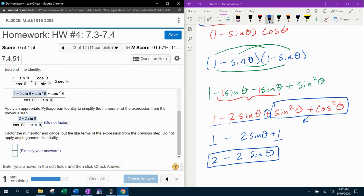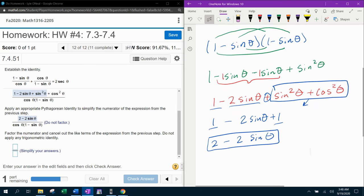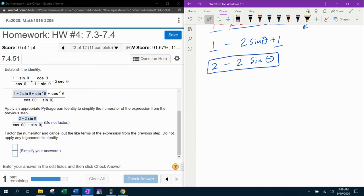Two minus two sine theta. Factor the numerator and cancel out the like terms of the expression from the previous step. So do not apply any trigonometric identity. So now what they want me to do is factor and cancel. Basically, that's what they're saying to do is factor and cancel.